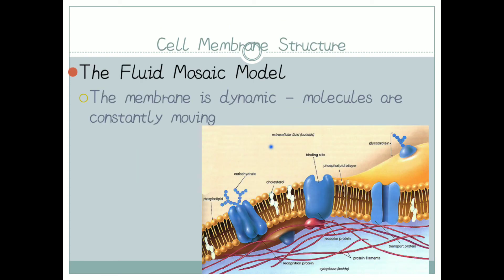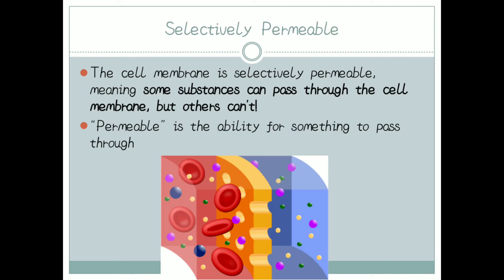Now let us discuss the fluid mosaic model. This model is dynamic — molecules are constantly moving, as we can observe in the given diagram. Now, why do we call the cell membrane selectively permeable? Here, some substances can pass through the cell membrane but not all. Permeable means the ability for something to pass through.